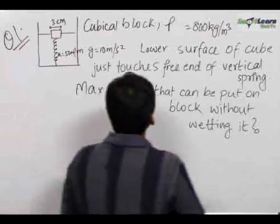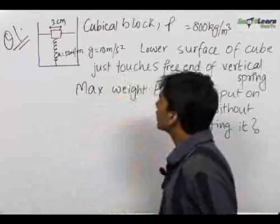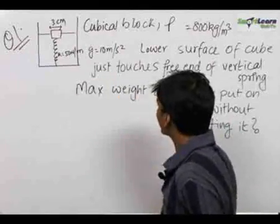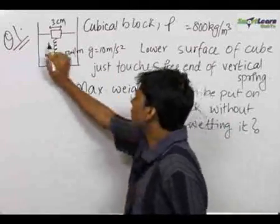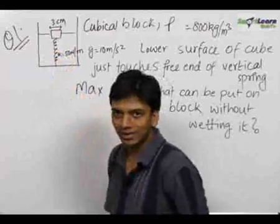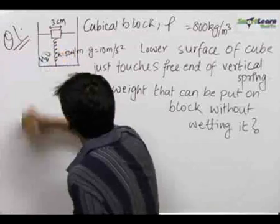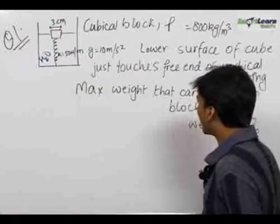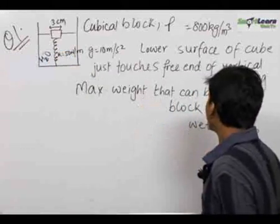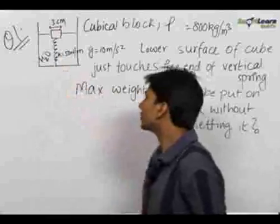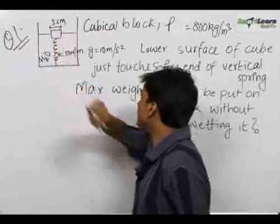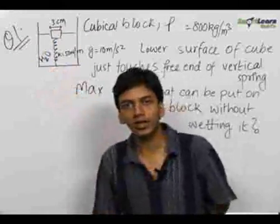In this question we first begin with, there is a cubical block of h equals 3 centimeters and the lower surface of the block just touches this spring when it is floating in water. This is water. Now we need to find out what is the maximum weight that can be put on this block such that this block does not sink totally in the water.